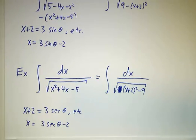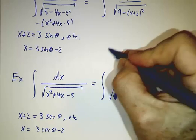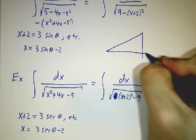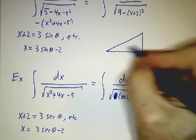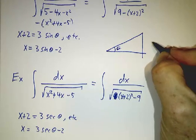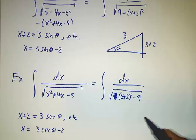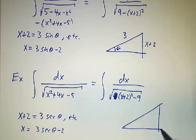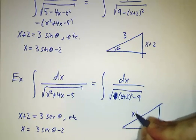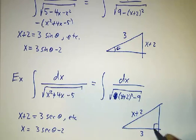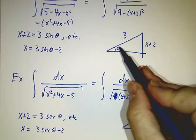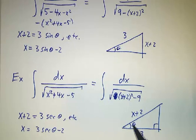And x is 3 sec of theta minus 2. So again, in this case, your triangle would be x plus 2 and 3. Here the sine of theta is x plus 2 over 3. Here the sec of theta is x plus 2 over 3.